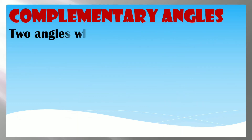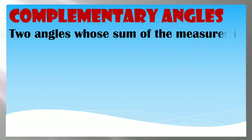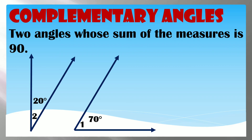Complementary Angles are two angles whose sum of measures is 90 degrees. When the sum of the measures of two angles equals 90, they are complementary angles.